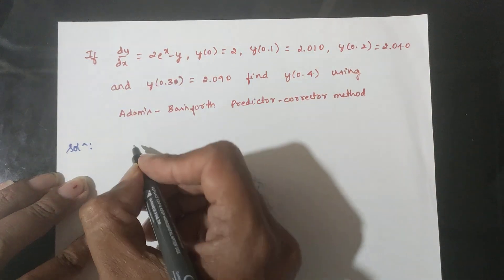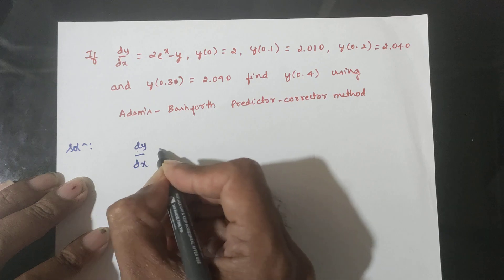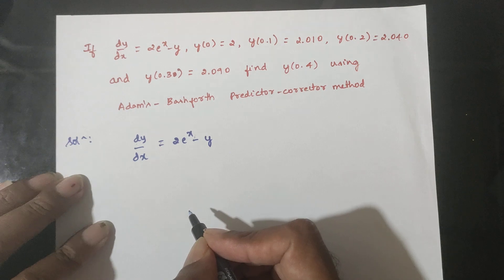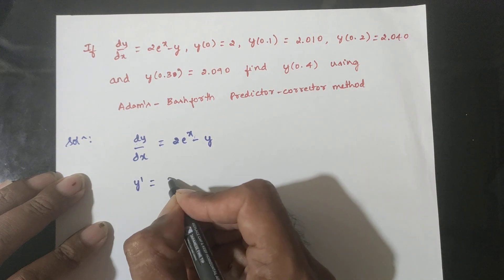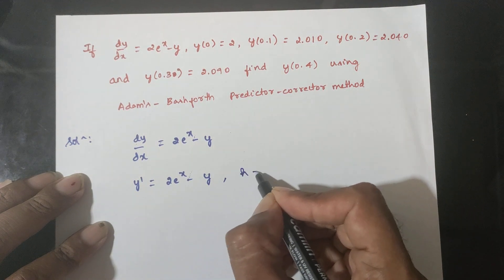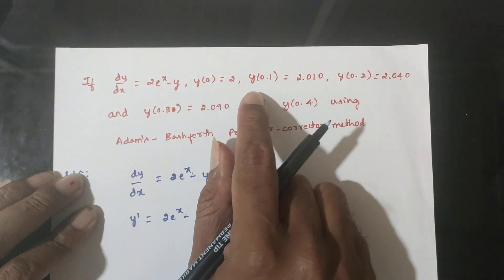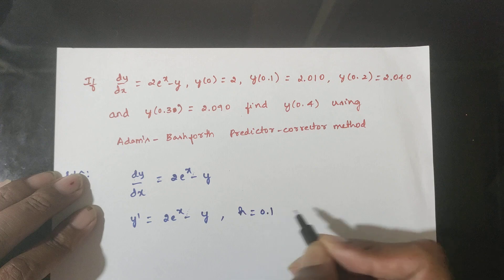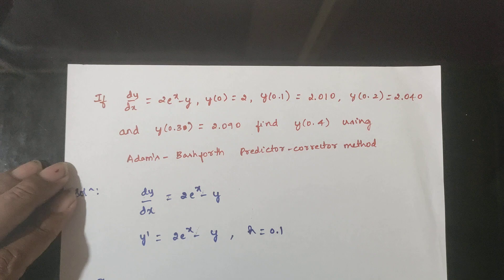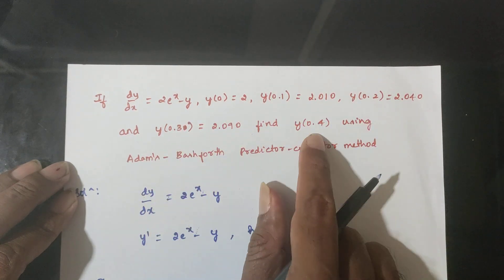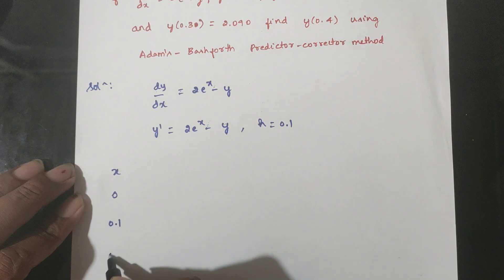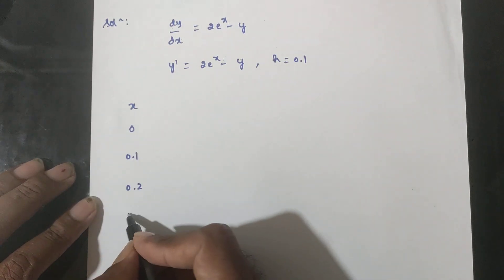First, note that dy/dx equals 2e^x minus y — this is the value of y dash, i.e., 2e^x minus y. h is the difference in x values: 0.1 minus 0 equals 0.1. We build a table with x values: 0, 0.1, 0.2, 0.3.